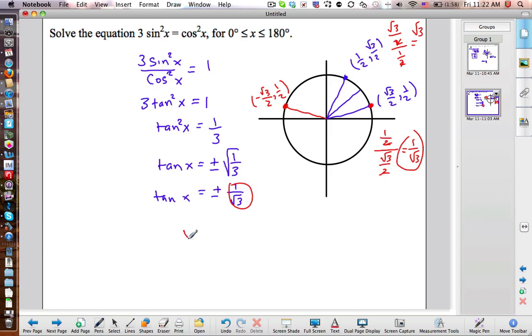So my x values are x equals 30 degrees, and x equals 150. And if the question was in radians, it'd be pi over 6 and 5 pi over 6.